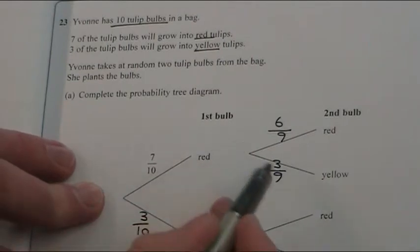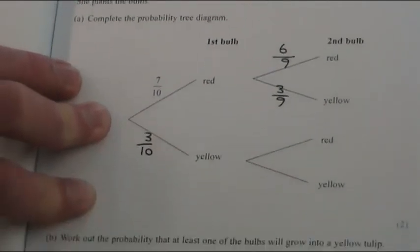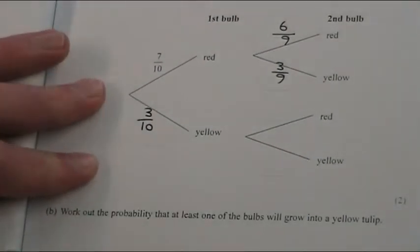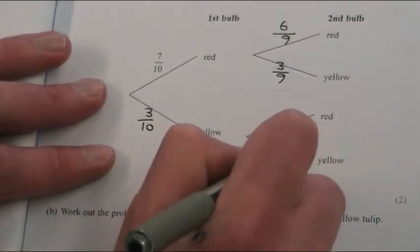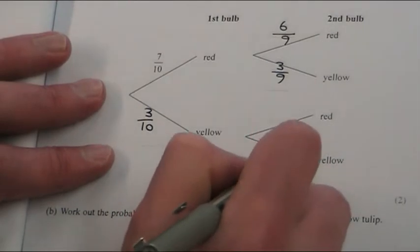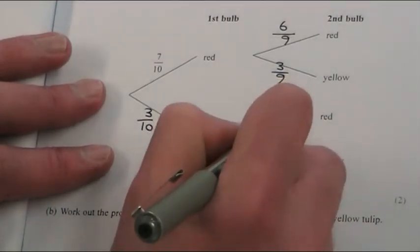Because if I've taken a red there are still 3 yellows. So let's do the yellow to yellow. If one is yellow, then there's only 2 going to be left out of the 9, so therefore this must be 7 out of 9.